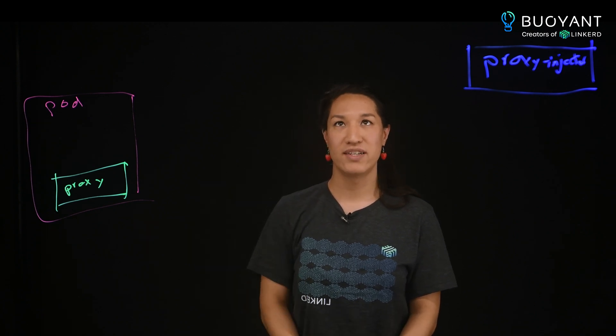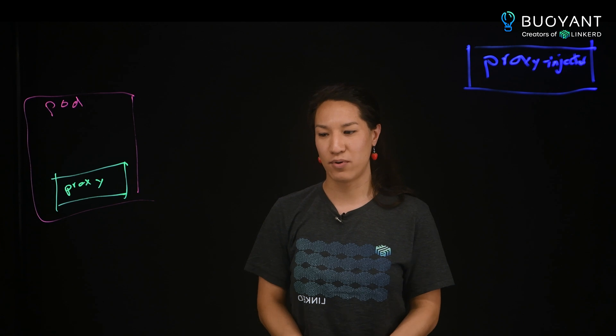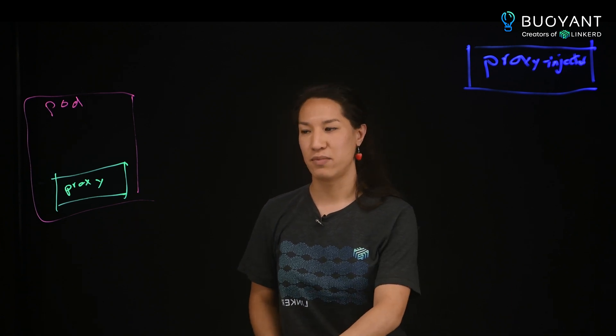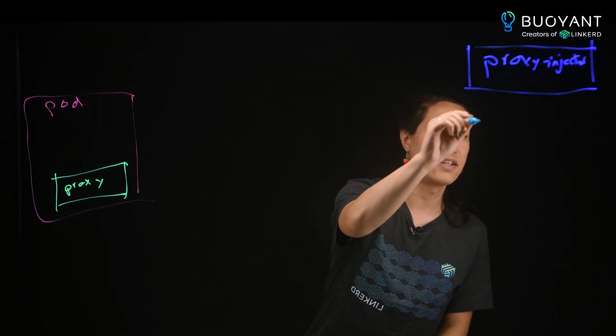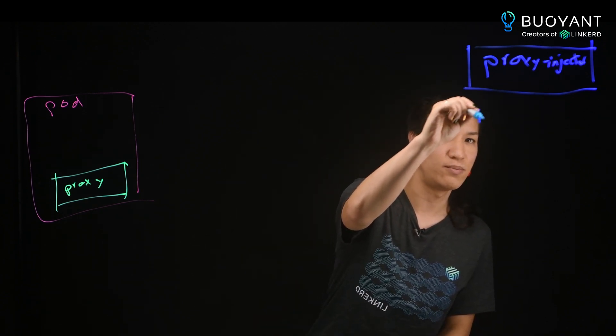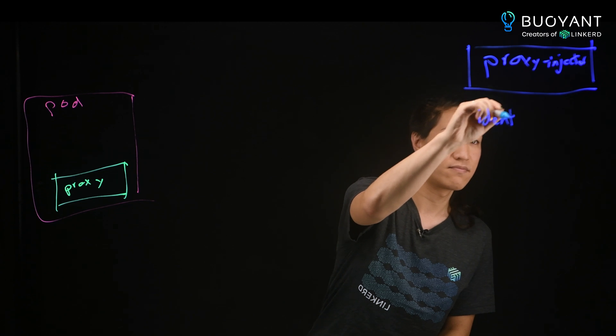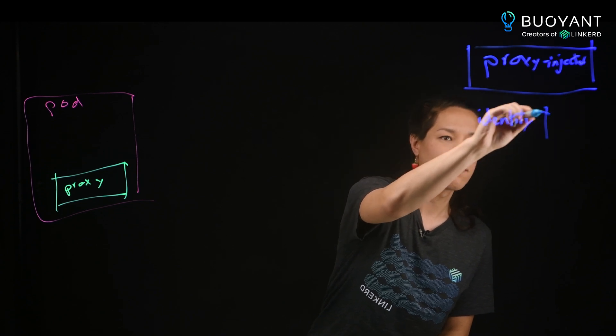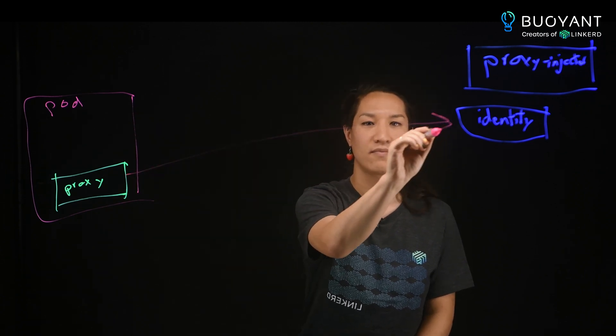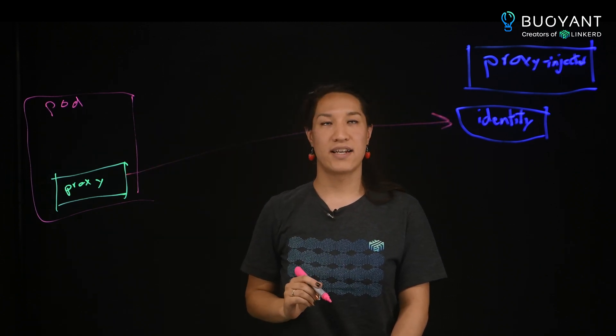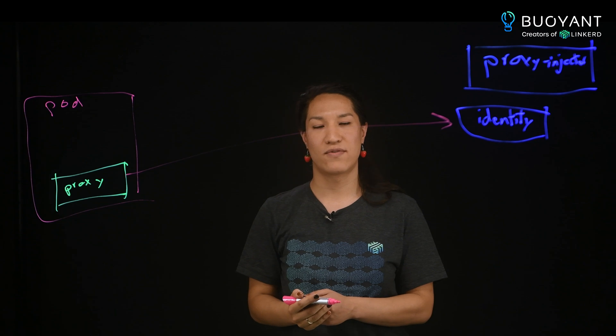Now this proxy also needs a lot of information in order to work properly. So in particular, one of the things that it does when it starts up is it makes a gRPC request to something called the identity controller, and this is also in the control plane. And this is how the proxy gets its certificates that it uses for MTLS.